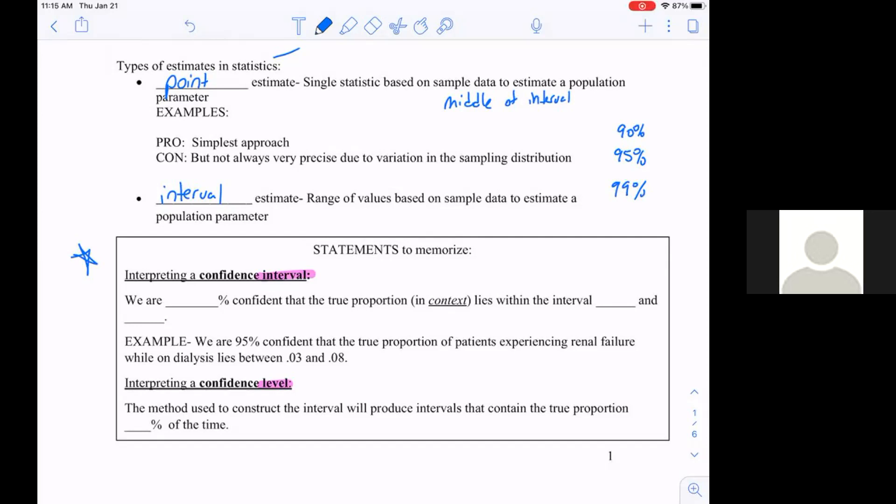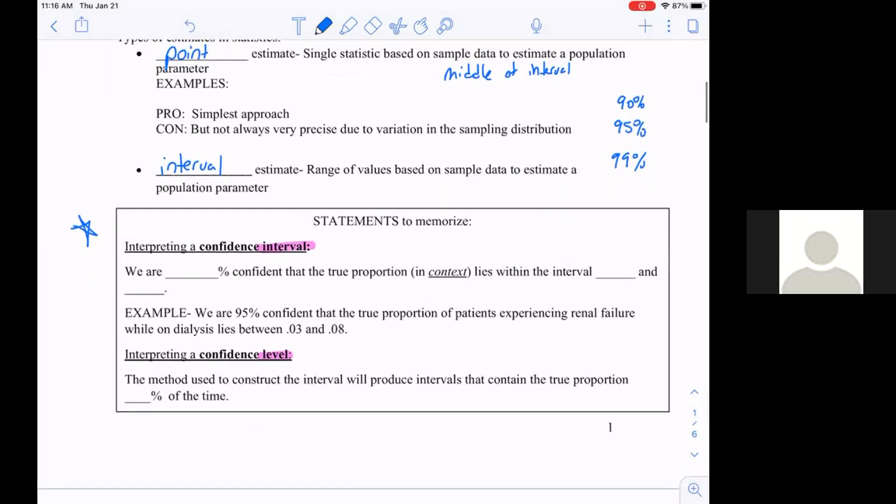The more confident I want to be, the wider my interval is going to need to be. An example statement might be: we are 95 percent confident the true proportion of patients experiencing renal failure while on dialysis lies between 0.03 and 0.08.